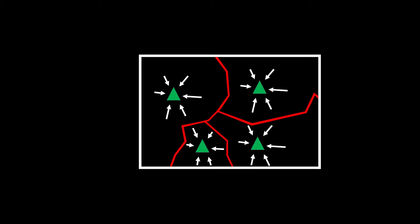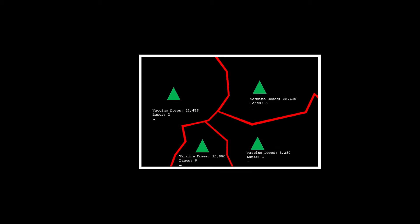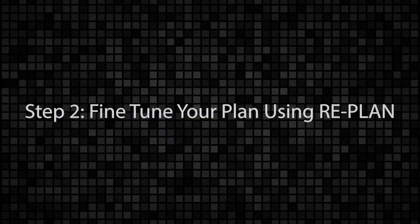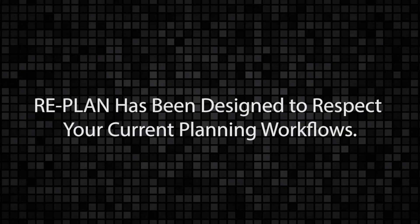First, we need to build a plan. For our purposes, a plan consists of a set of vaccination pod locations and corresponding resource allocations. We will start by establishing an initial plan, and then we will use RePlan to make any adjustments to fine-tune that plan. We realize that different jurisdictions will build their initial plans in different ways, so we have devised different methods in RePlan to create an initial plan.